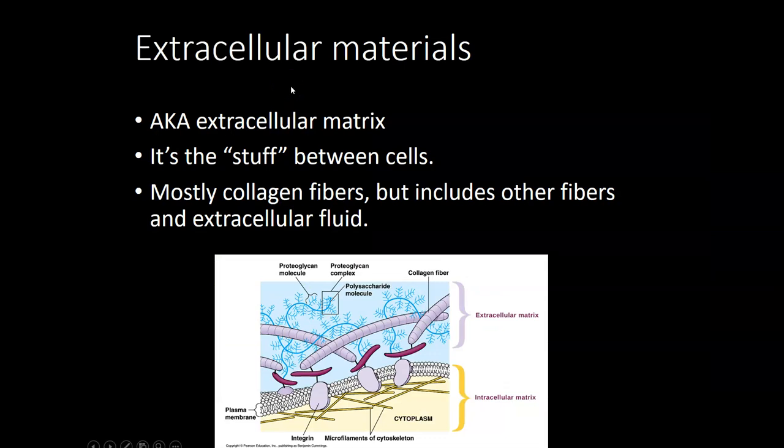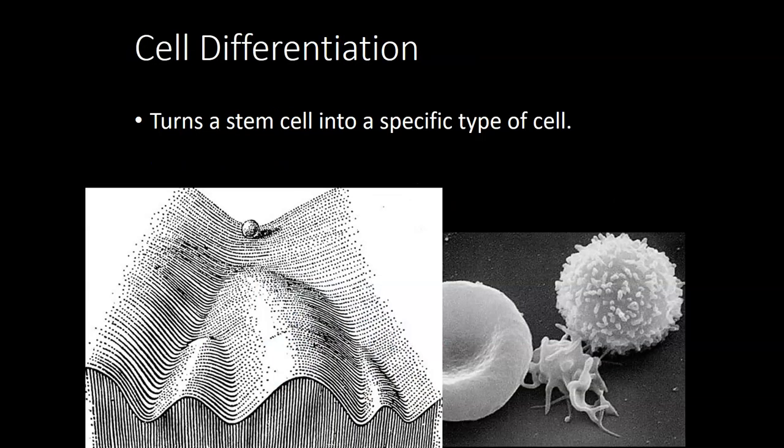Extracellular materials is the stuff found outside of cells. The tissue with the most extracellular materials is connective tissue — there are lots of protein fibers that exist in the extracellular space. Most other tissues just have fluid between the cells, which is called extracellular fluid or sometimes interstitial fluid.